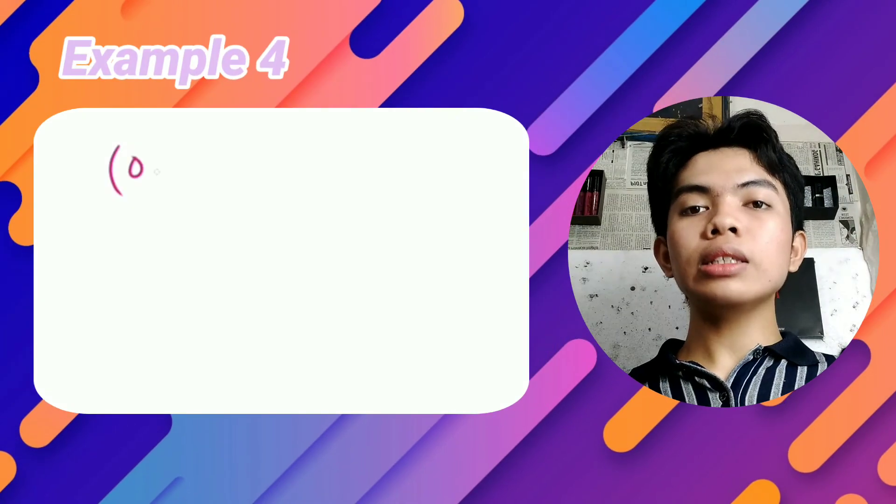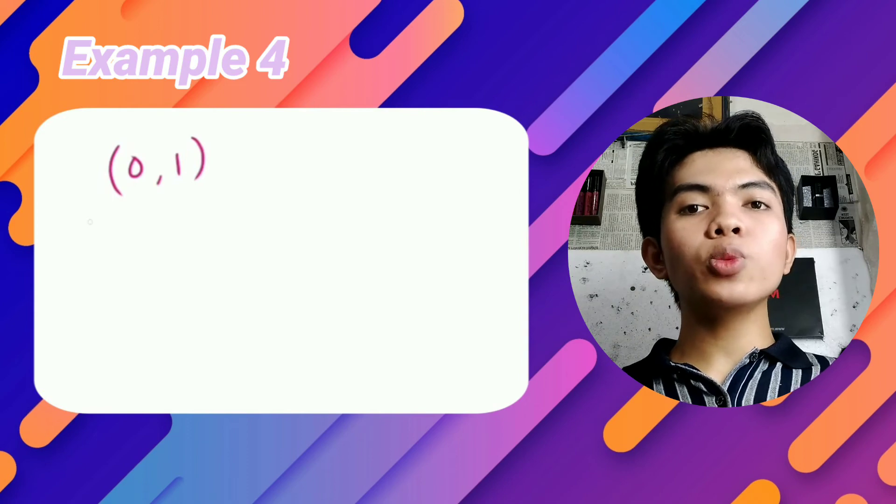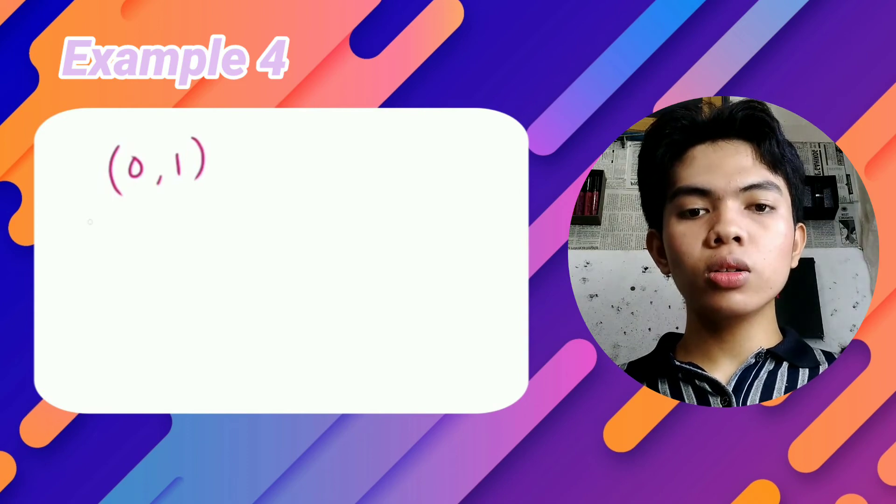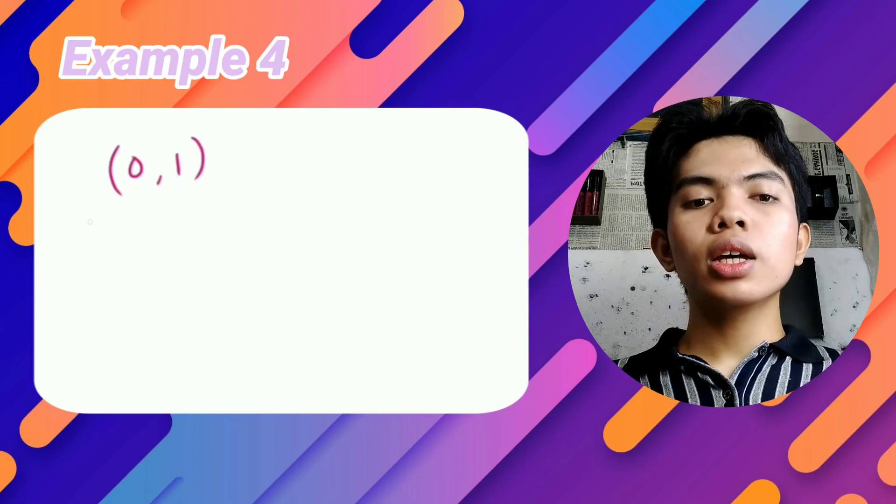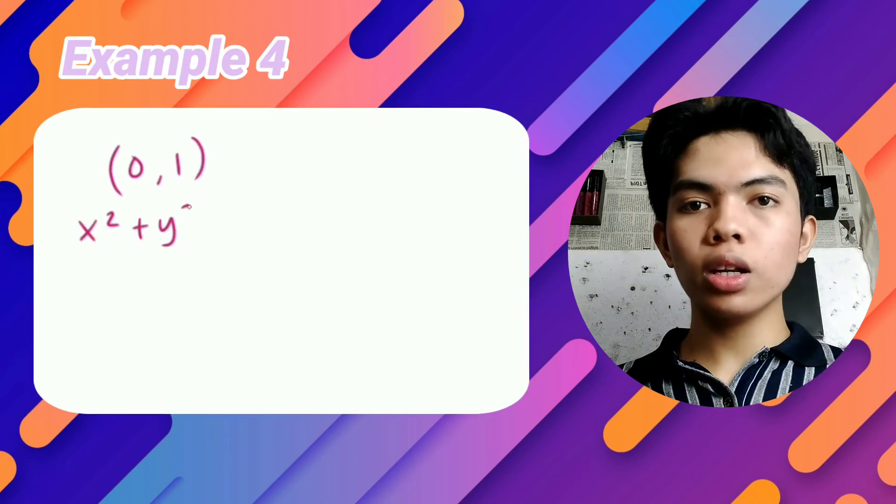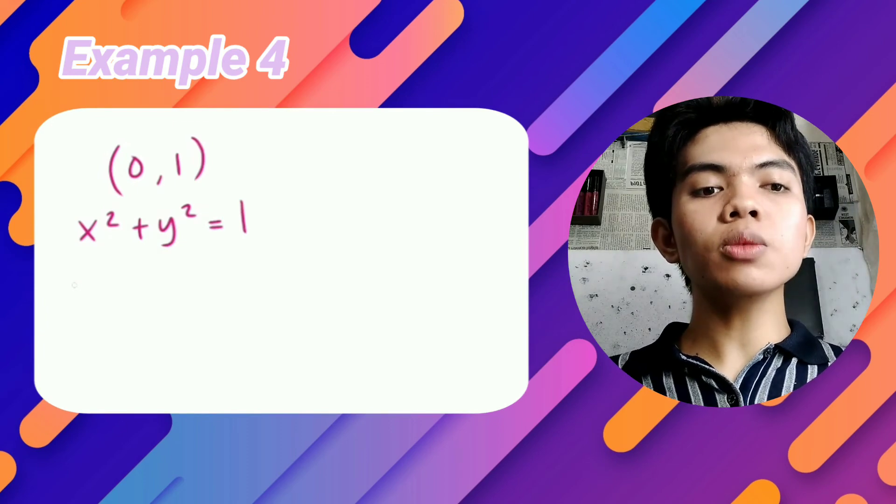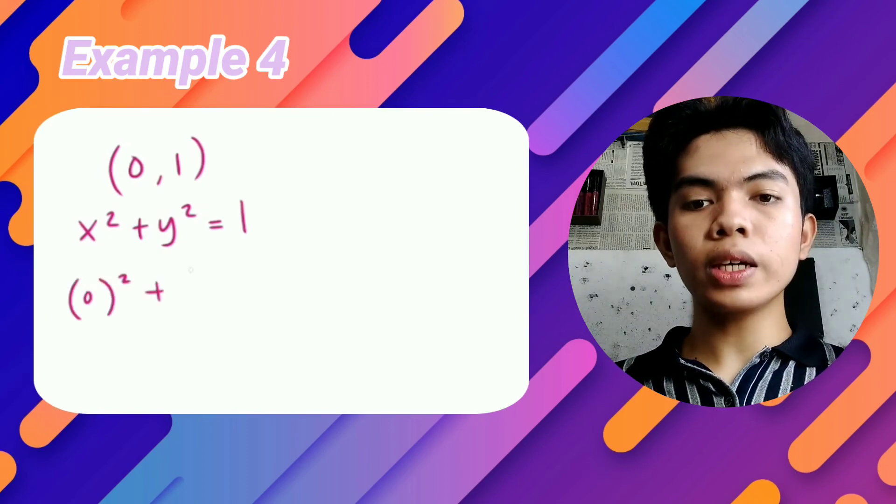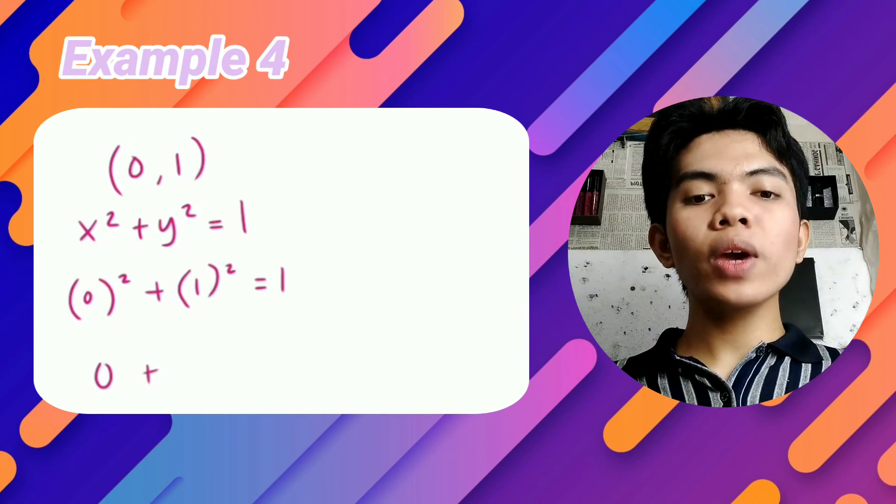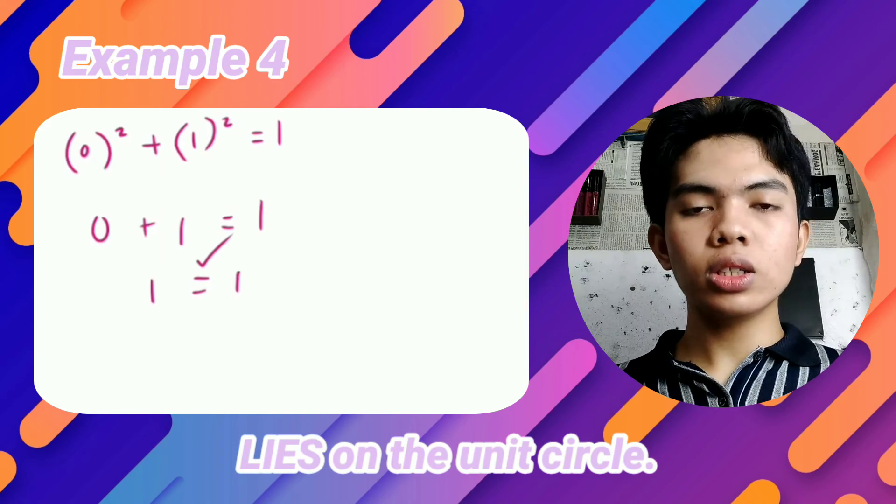For our last example, our given point is (0, 1). To know if the point lies on the unit circle, we must substitute it into the formula x² + y² = 1. After that, the equation becomes 0² + 1². Since the equation equals 1, we can conclude that the point lies on the circle.